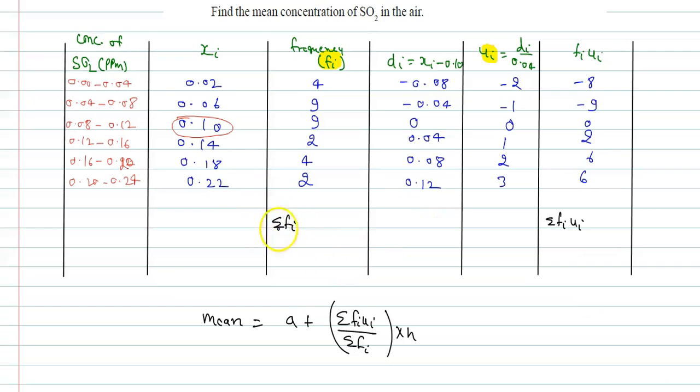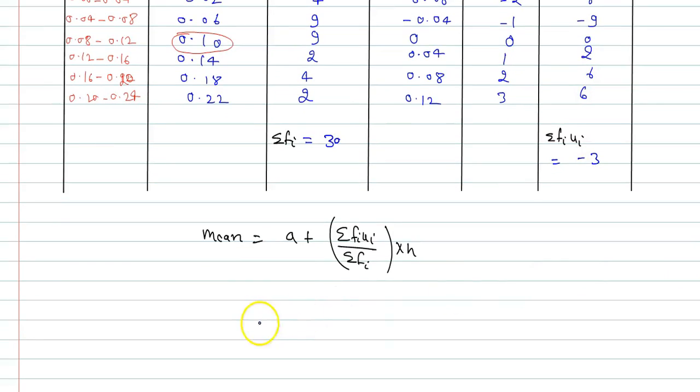So now we can calculate summation fi and summation fi ui. Mean is given by a plus summation fi ui divided by summation fi into h, where a is the assumed mean and h is the interval. So summation fi is 30 and summation fi ui is minus 17 plus 14, which is minus 3.